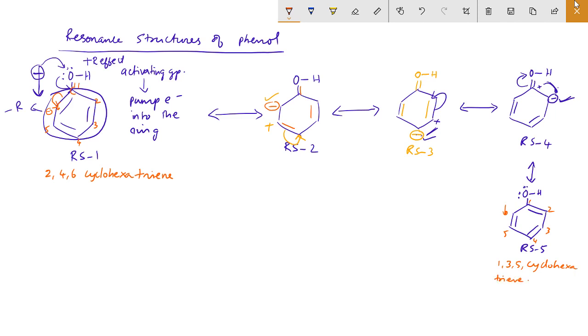So, we have drawn the resonance structures of phenol. The change in position proves that the electron is moving.